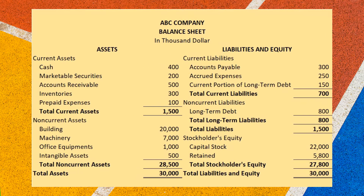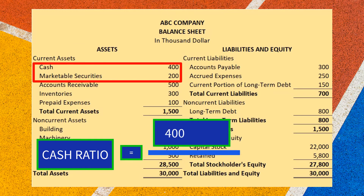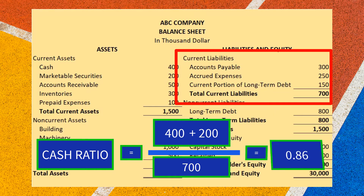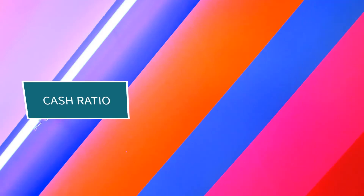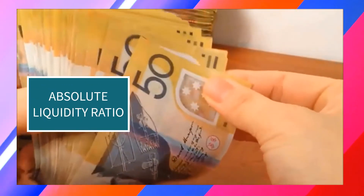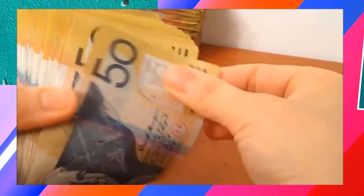In our example, cash ratio is computed as cash of 400 and marketable securities of 200, equals 600 as numerator, divided by current liabilities of 700 as denominator. The result is 0.86. The cash ratio is also called the absolute liquidity ratio because it considers only the absolute liquidity of the firm.